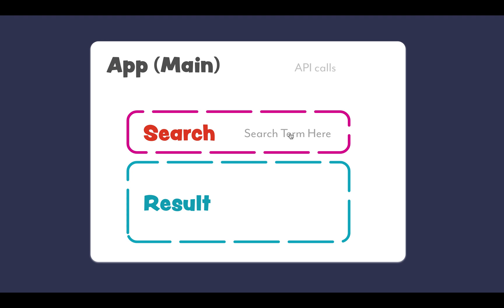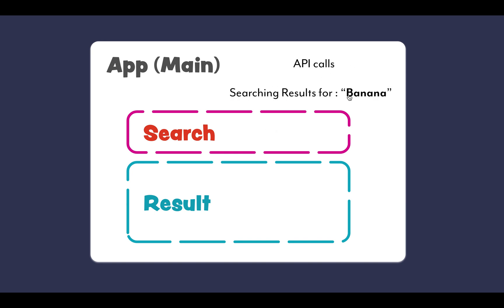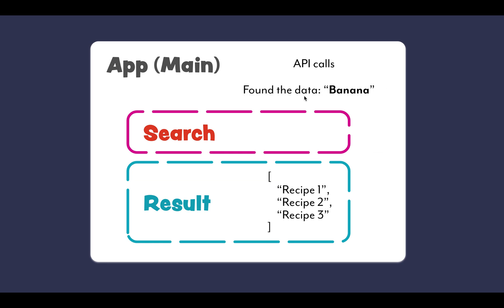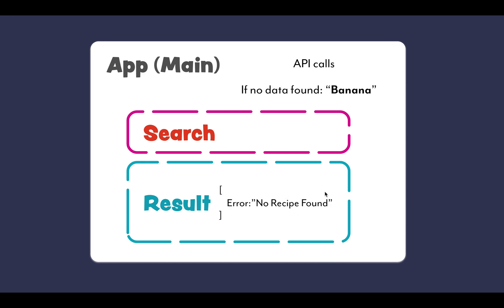Here, if we have any search term — let's say 'banana' — this will pass on to the parent, and the parent will do an API call. Through the API call we are supposed to get a result. If we get the recipes we'll get an array of results, or we can get an error. We are supposed to pass results down to the result component as an array, and pass any errors as well. We'll be handling those things in this series, but for this video we will be creating the components.